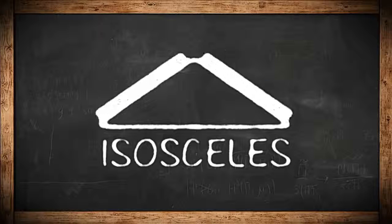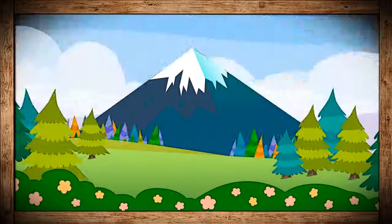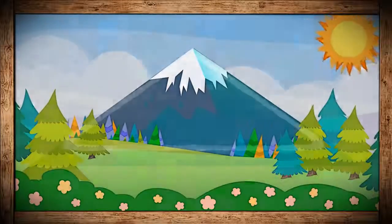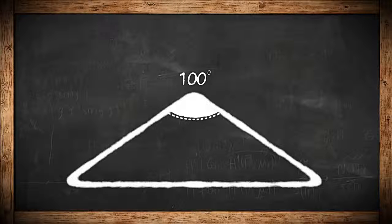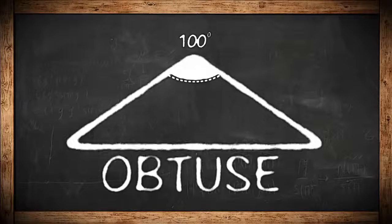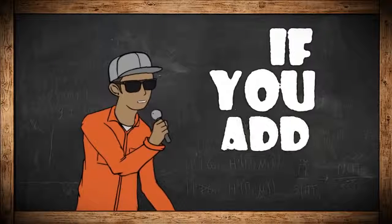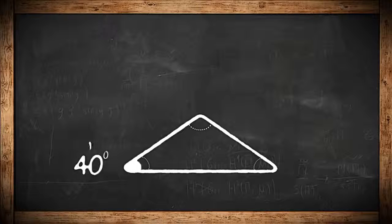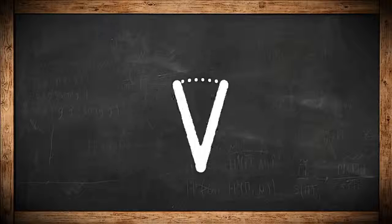Isosceles triangles have two equal sides, like this mountain we're about to climb. And since one angle's over 90 degrees, an obtuse triangle is what we see. If you add up every angle, there are 180 degrees in a triangle.